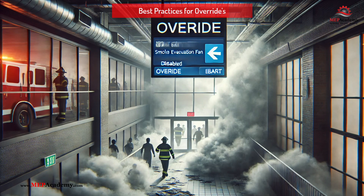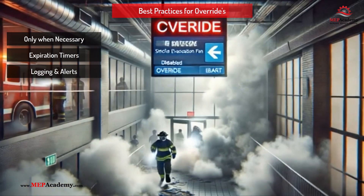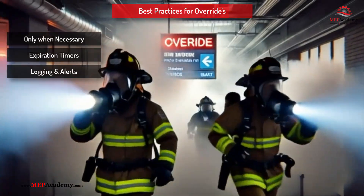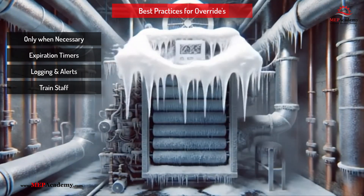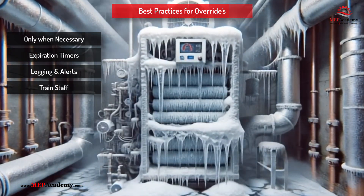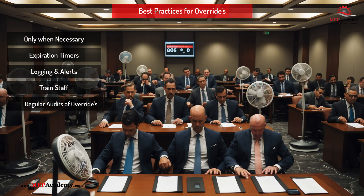Best practices for override management: To prevent override-related failures, the following best practices should be implemented. Use overrides only when necessary — avoid casual overrides and use them strictly for troubleshooting, maintenance, or emergencies. Set expiration timers so overrides reset after a predefined period. Implement logging and alerts to track all overrides in the building automation system and alert operators of prolonged or unsafe overrides. Train facility staff to ensure all personnel understand when, why, and how to properly use overrides. Regularly audit overrides by conducting periodic system audits to identify and remove forgotten overrides.